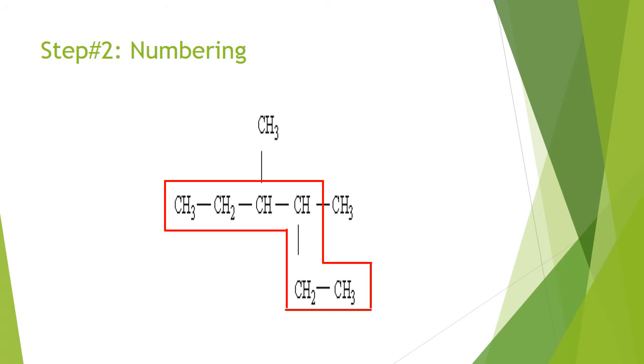Here it's worth mentioning that the main chain can be numbered from right to left as shown by the blue numbers, or from left to right as shown by the green numbers. In that case, both numbering systems are correct since both ends of the chain have the same distance from the branch.